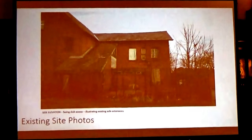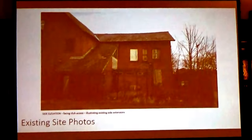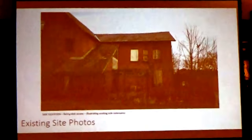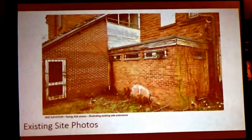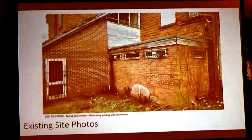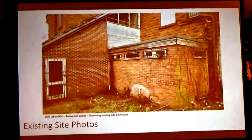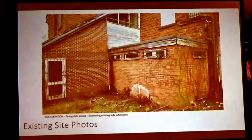To the side facing the social club driveway there are two side extensions. The largest sloped one is a fire exit which would leave the office building. The single storey flat roof element was a toilet block, again for the office accommodation.